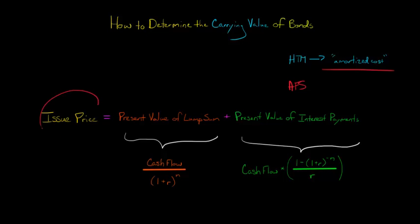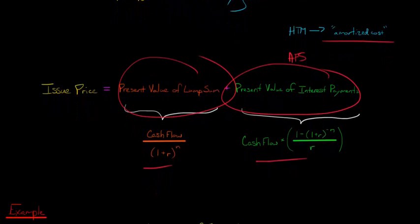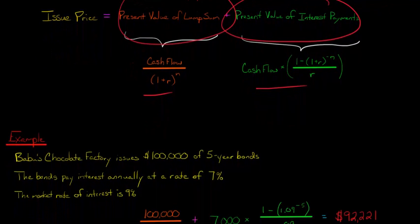When we calculate the issue price of the bond, when the bond is initially issued, we just get the present value of the face value of the bonds that will be paid out upon maturity and the present value of the interest payments. Here's the two formulas you can use to calculate that. But we talked about that before, so I'm not going to focus on it. Right now, let's focus on our example.